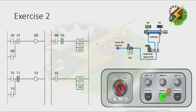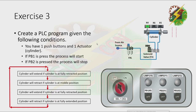Now let's go to our next exercise. You have two push buttons and one actuator. If PB1 is pressed, the process will start. If PB2 is pressed, the process will stop.